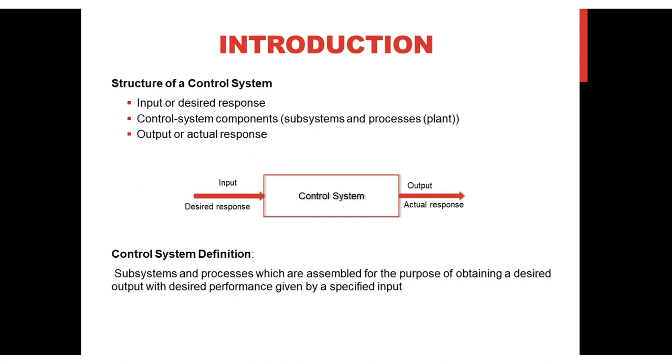Hence, a control system can be defined as subsystems and processes which are assembled for the purpose of obtaining a desired output with desired performance given by a specified input.